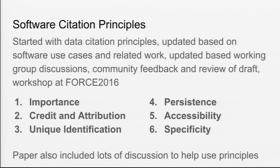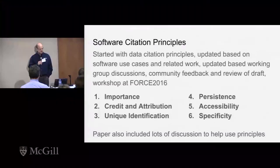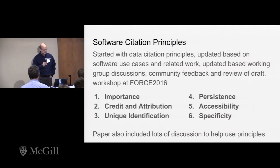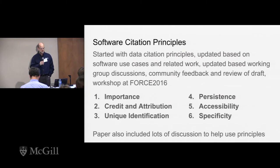That was early 2017. The Software Citation Principles look somewhat similar to the data citation principles but are not the same because software is not data. We started with the data citation principles and updated them based on software use cases over that year and a half. We arrived at six principles: importance, credit and attribution, unique identification, persistence, accessibility, and specificity.